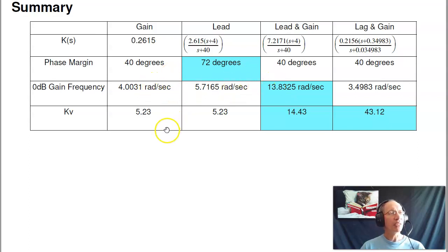In addition, by clicking up the gain, I made the error constant three times bigger. So the lead plus gain kind of gives you the best of all worlds. I get a faster system, better tracking. Generally, what you use is a lead compensator.